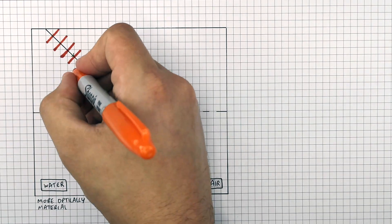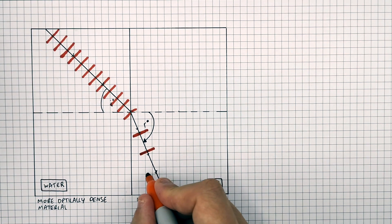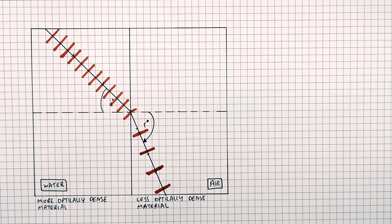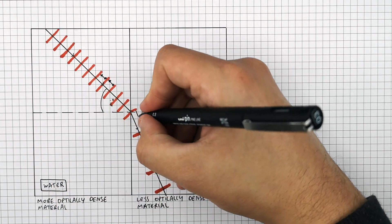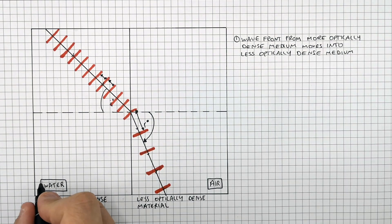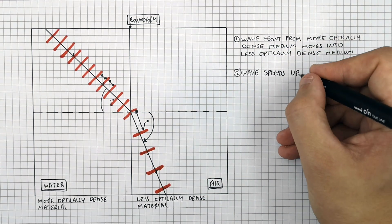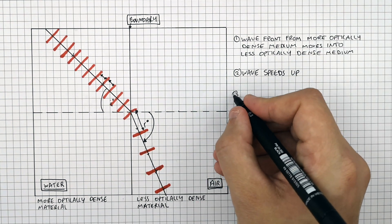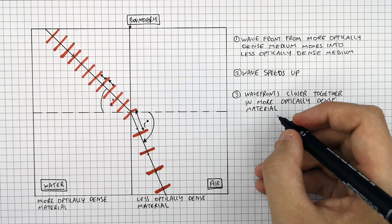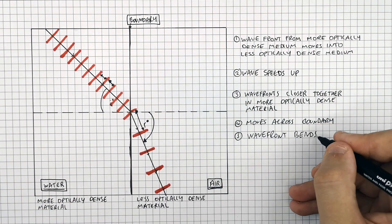These are the wavefronts of the incident ray travelling through water. These wavefronts are closer together than the wavefronts in air, because the wavelength increases as it enters the air from the water. So the wavefronts are closer together in the water and further apart in the air. As the wave crosses the boundary from water into air, the wave speeds up because the wavelength increases but the frequency stays the same. The wavefronts are closer together in the more optically dense material — the water — and the wave moves across the boundary.